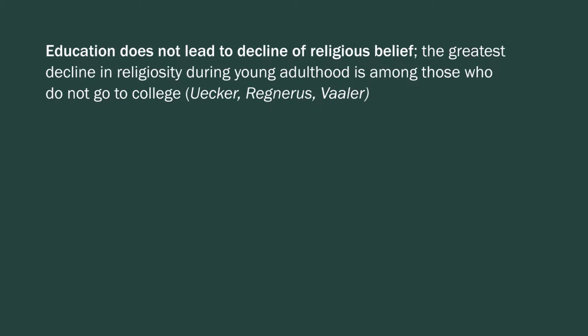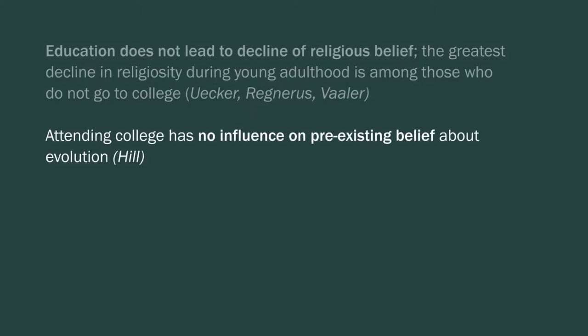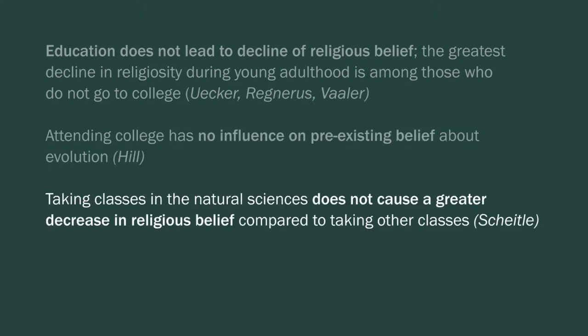Now, other research can be interpreted in a very similar way. There's been a number of studies of whether higher education leads people to have fewer religiously based beliefs about the natural world. The premise here being that higher education exposes you to science, which I think is generally true. So if there is systemic conflict, exposure to any science should lead to less belief in any religion, but particularly religious beliefs that directly conflict with science. One study shows that education in general does not lead to the decline of religious belief during young adulthood. But if you look at young adults, the religious belief declines the most among people who didn't go to university. Other studies show that attending college has no influence on pre-existing belief about evolution and that taking classes in the natural sciences does not cause a great decrease in religious belief compared to taking classes in other fields.